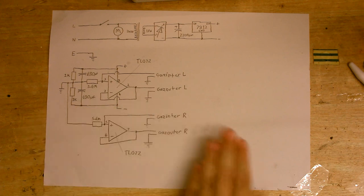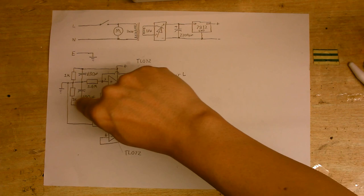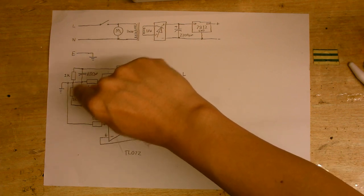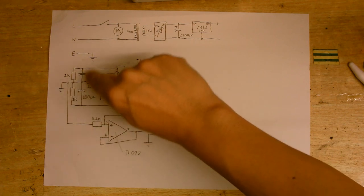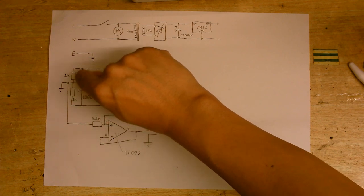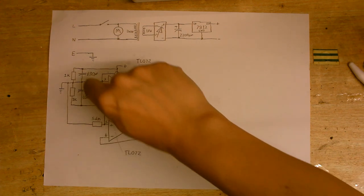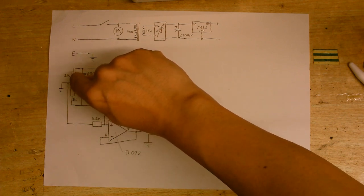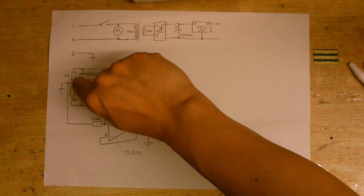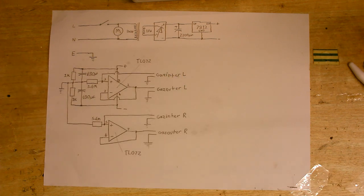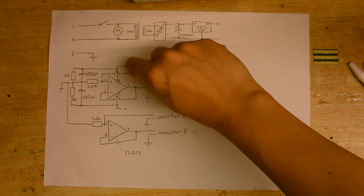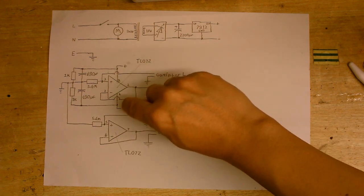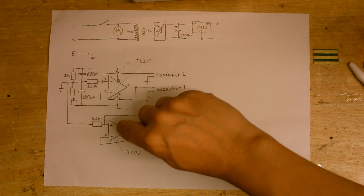But one thing to keep in mind is that in this case, the negative rail is not going to be connected to ground, and you're about to see why. So this is the actual impedance matching circuit itself. This part here consists of two 680 microfarad capacitors and two 1-kilohm resistors. Right in the middle here, we are going to get half of the supply voltage, so about 6 volts, which is going to be used as the ground.